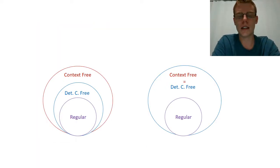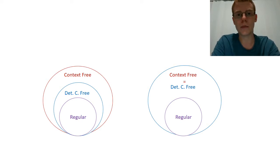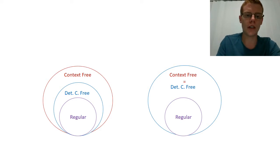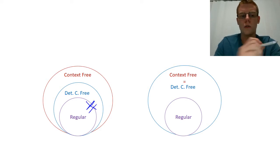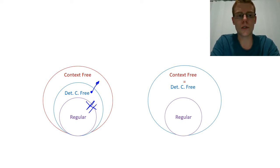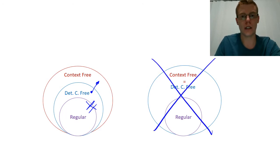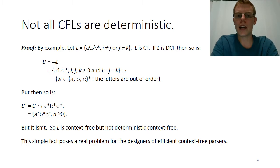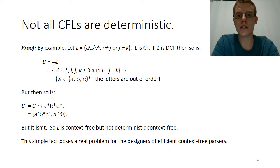We can obviously realize that the deterministic context-free languages are not the same set as the regular languages, because we just discussed a context-free but not regular language built from A^N B^N which was deterministic context-free. Our question is whether deterministic context-free languages represent all context-free languages. It turned out that with regular languages, deterministic and non-deterministic finite state machines didn't give us extra power. It will turn out — and we'll show this in the next slide — that non-determinism does actually add power for context-free languages, because we'll prove that this is not the case.